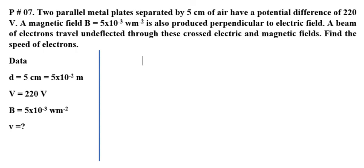Welcome viewers, problem number 7. Two parallel metal plates separated by 5 cm of air have a potential difference of 220 volt. A magnetic field B equal to 5 into 10 to power minus 3 Weber per meter square is also produced perpendicular to electric field. A beam of electrons travel undeflected through these crossed electric and magnetic fields. Find the speed of electrons.